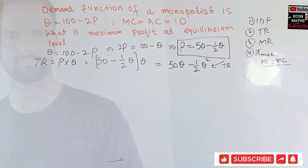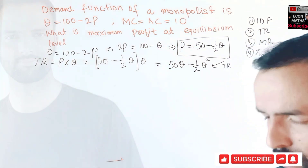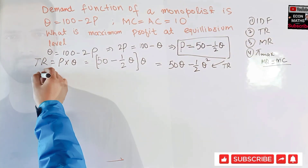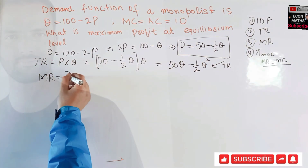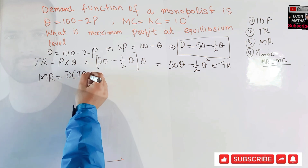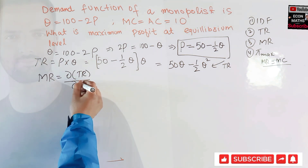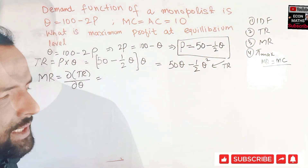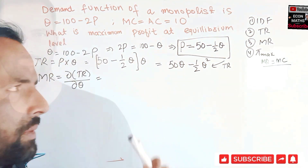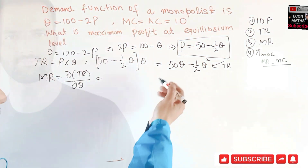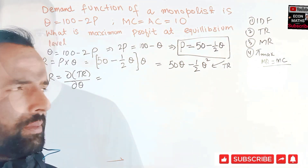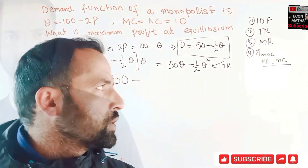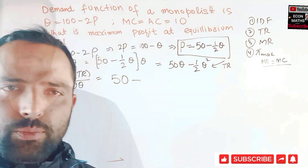The next step is to find marginal revenue. Marginal revenue is simply the derivative of total revenue with respect to quantity. Taking the derivative of our total revenue function: the derivative of 50Q is 50, and by the power rule the derivative of one-half Q squared is Q — since 2 becomes the coefficient and the exponent reduces by 1. So marginal revenue equals 50 minus Q.